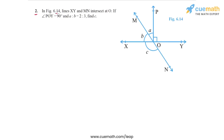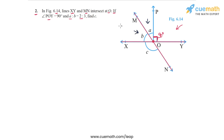Question 2 says: in figure 6.14, lines XY and MN intersect at O. XY is one line and MN is the other line, and these two lines intersect at point O. Also, if angle POY is equal to 90 degrees, and A is to B is 2 is to 3, what is A to B? A is this angle and B is this angle — the ratio of the measures of these two angles is 2 to 3.